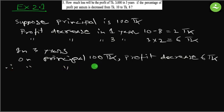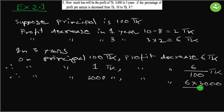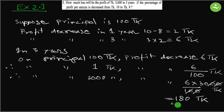We use the unitary method. On a principle of 1 taka, profit decrease equals 6 divided by 100 taka. Therefore, on a principle of 3000 taka, profit decrease equals 6 divided by 100 multiplied by 3000. Simplifying — the double zeros cancel — so 6 multiplied by 30 equals 180 taka. The profit decrease is 180 taka, and that is the answer.